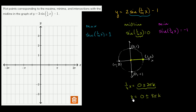So the function intersects the midline whenever x is 0 plus or minus any integer multiple of 8π. When x equals 0, all of the sine part is 0, and y equals negative 1. So we have a midline intersection at x equals 0, y equals negative 1.